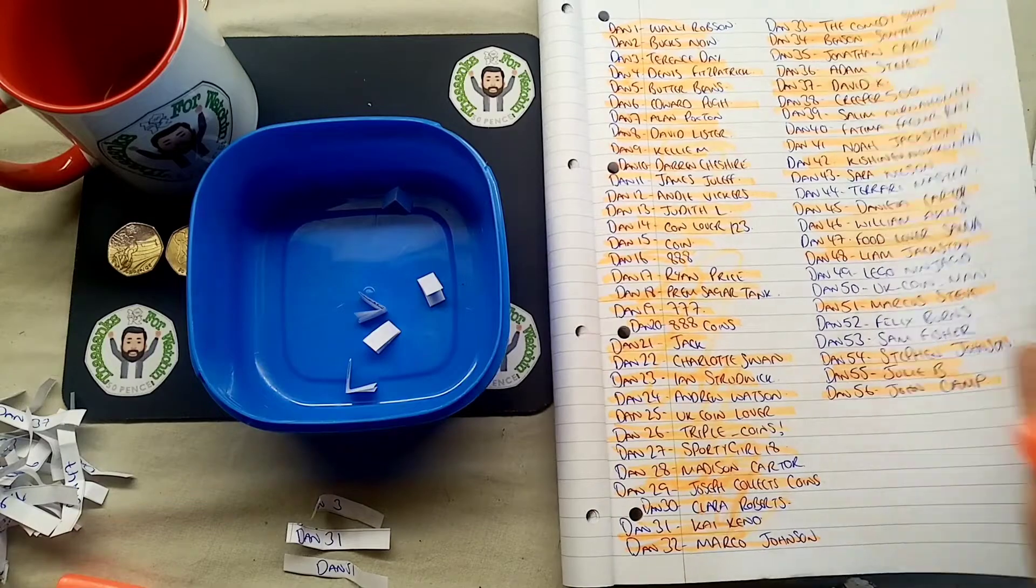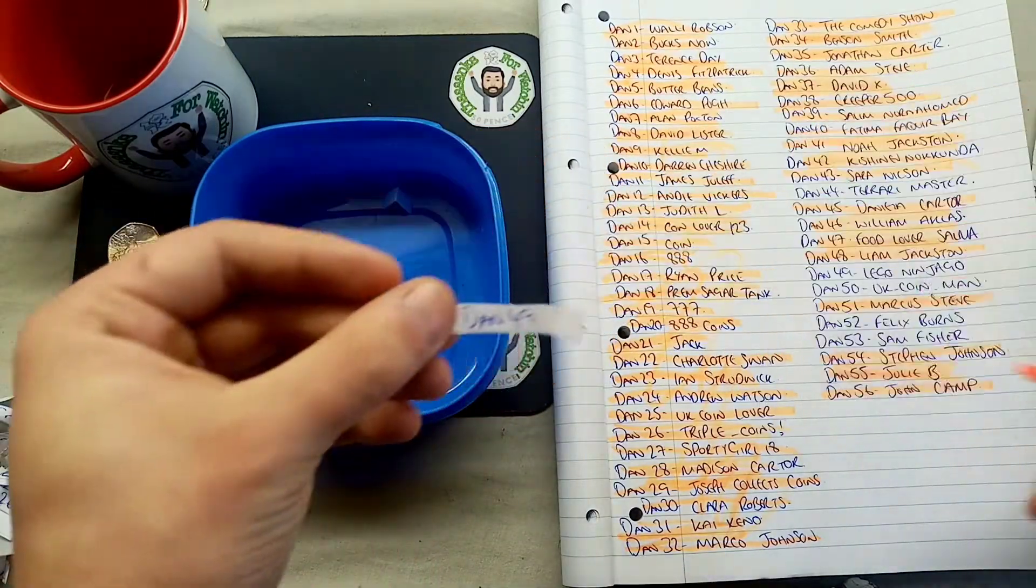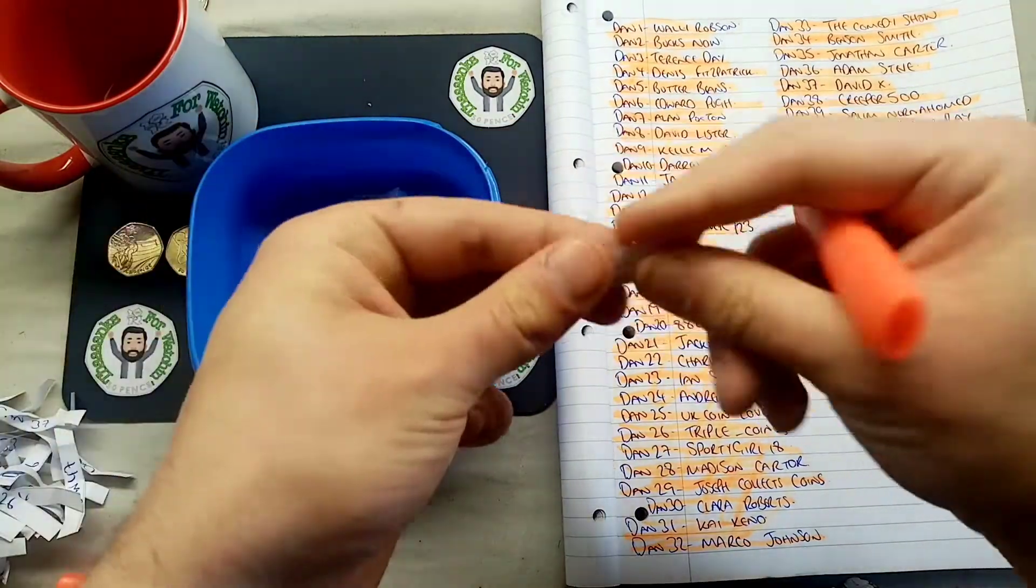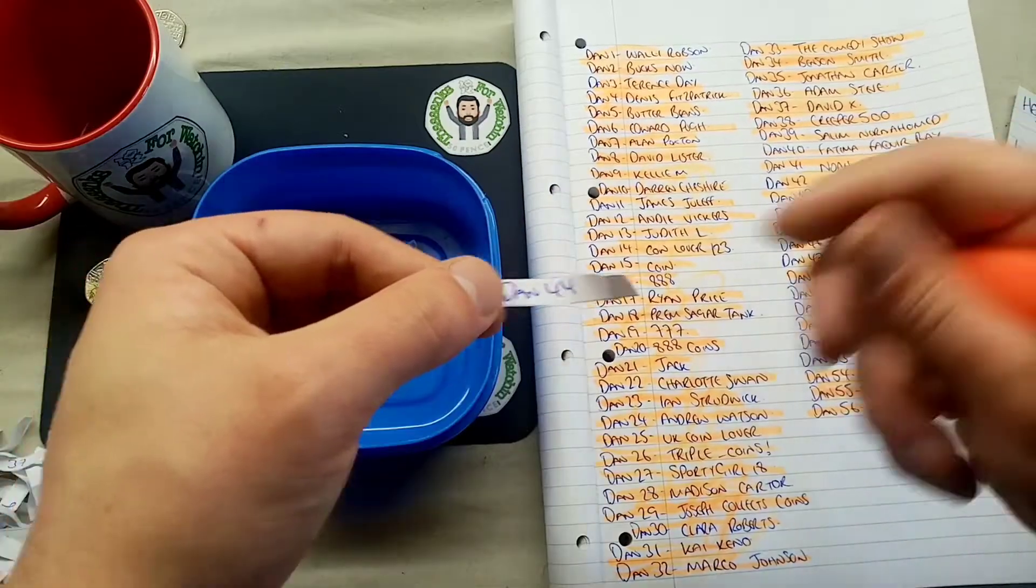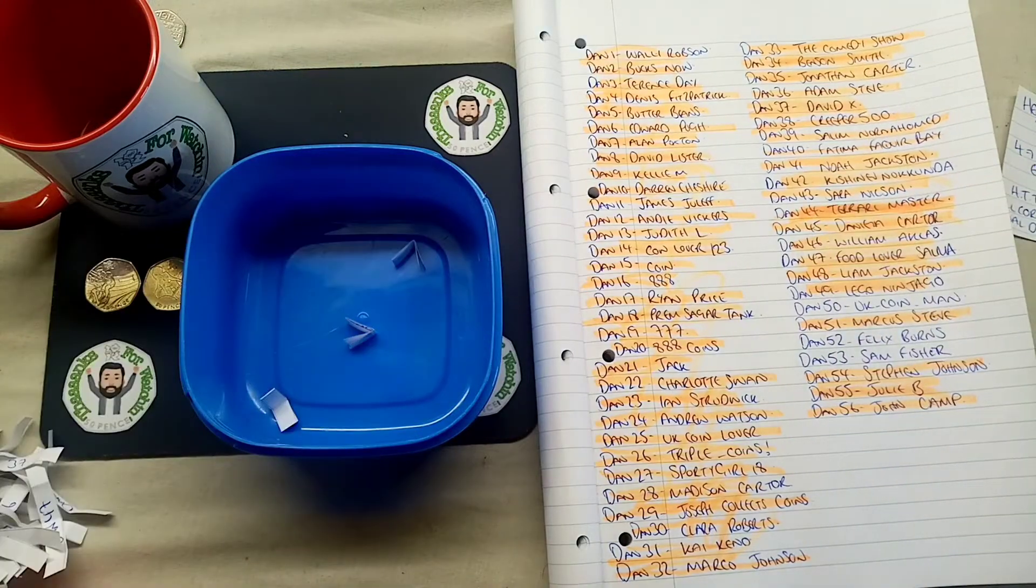We're down to just four names in the bowl. Five names in the bowl. Dan 49 is out next unfortunately. That's the end there of Lego Ninjago. 44 is out next. That's going to be then the end of Tarara Master.